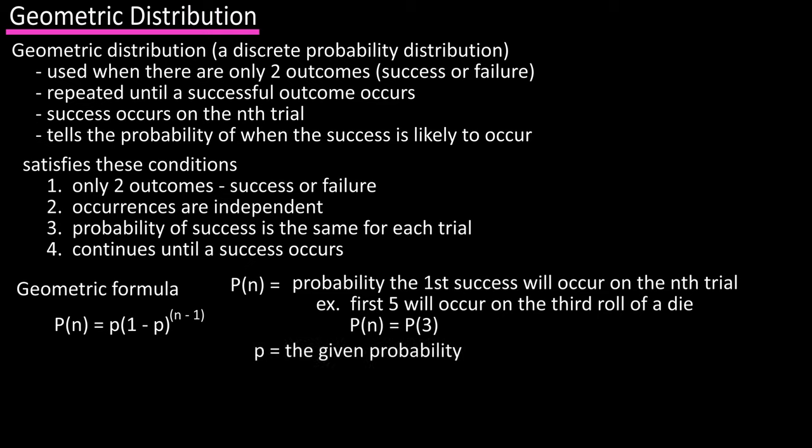So probability of n would be probability of three for the third die roll. Small p in the equation represents the given probability. In our die roll, the probability of a five is one over six